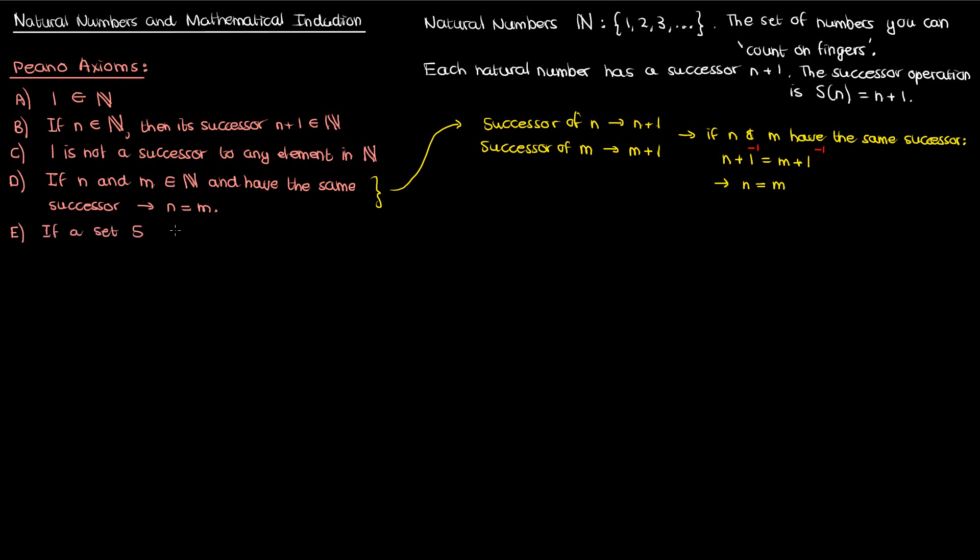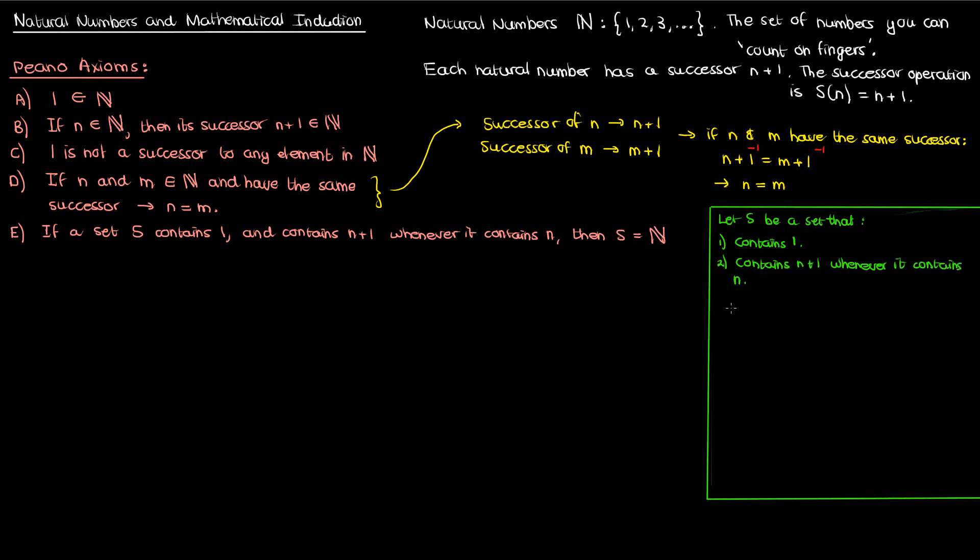The fifth axiom is probably the most important. It says that if I have a set S, then this set contains 1. And in addition, if this set also contains N plus 1 whenever it contains N, then the set S is the set of natural numbers. Let me explain this. Suppose I have a set that contains 1, and contains N plus 1 whenever it contains N. Since we know it contains 1, that means by the second statement it must contain 1 plus 1, which is 2.